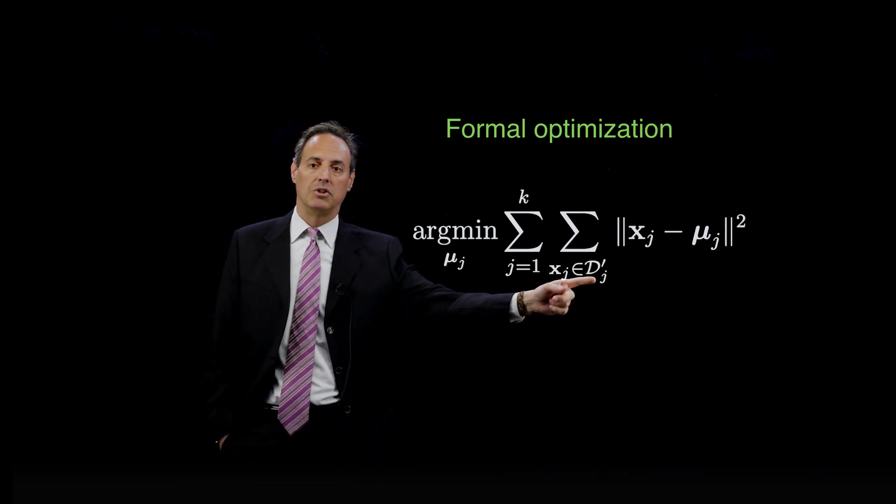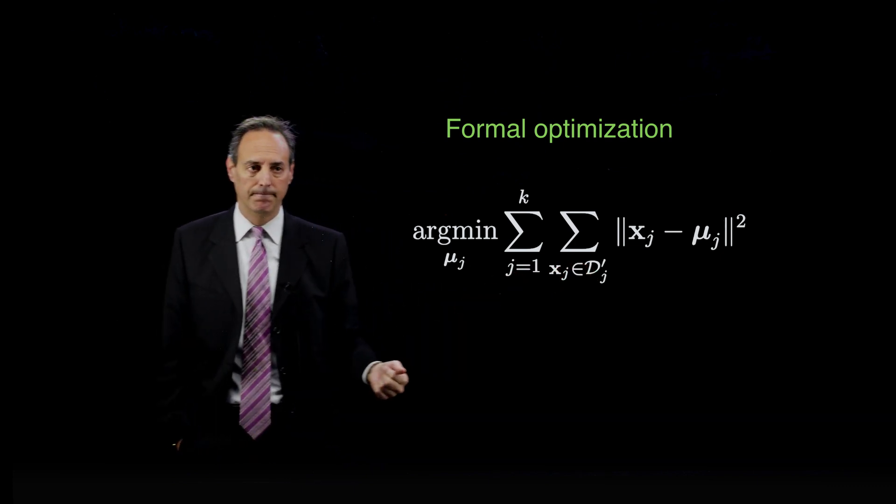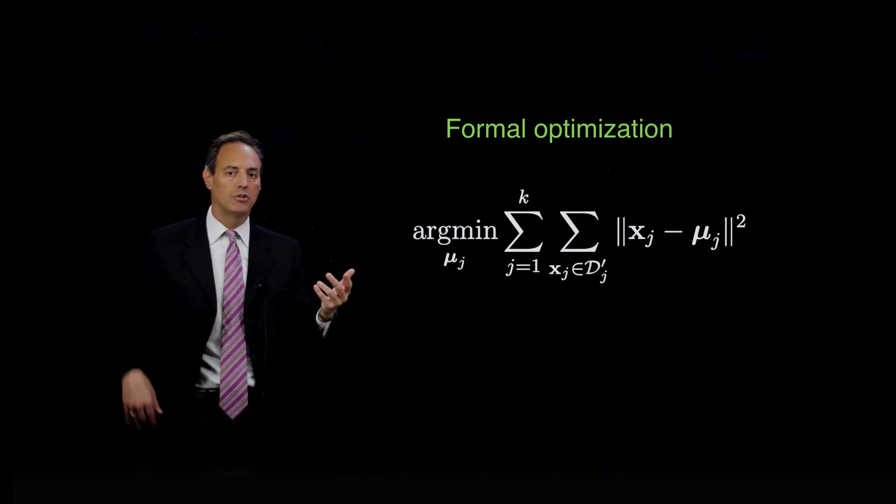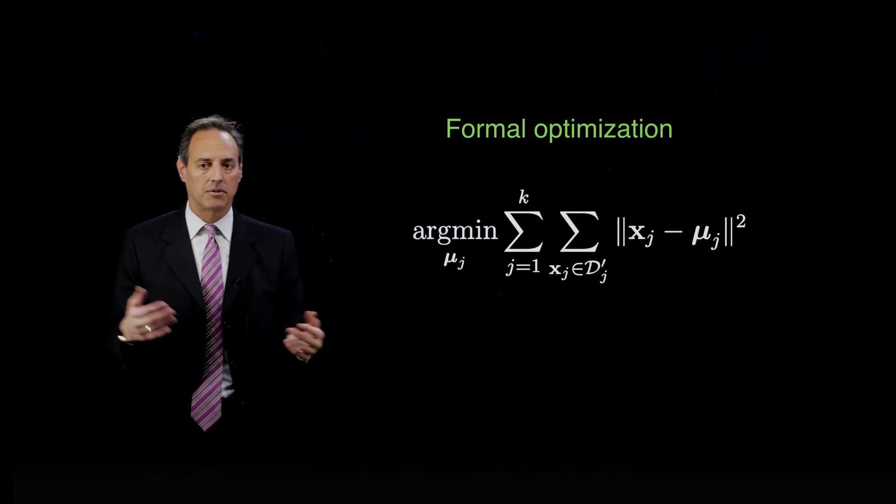So this k-means algorithm has a rigorous optimization framework. The algorithm I told you about is just to find these centroids, keep moving them until you've reached and you've minimized this sum here, which is the sum over the k clusters and the distance between each point to each cluster over all the data, which is the data's d prime.